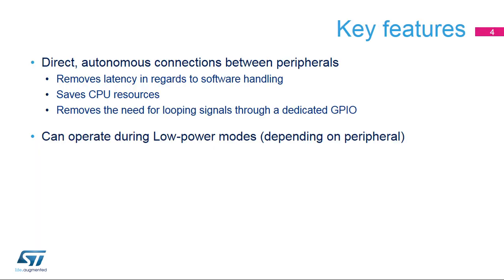The interconnect matrix offers two main features. First, it ensures direct and autonomous connections between peripherals, allowing removal of latency in regards to software handling, thus saving GPIO and CPU resources. Second, the interconnection between certain peripherals can even operate during low-power modes.